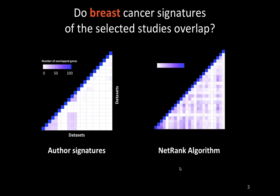We call it the Net Rank algorithm. In this algorithm, it tries to exploit the synergy between statistical significance and biological relevancy, and focuses more on those signatures that are more relevant and more in common across different cancers. As you can see here, it's already much better in terms of number of overlaps.